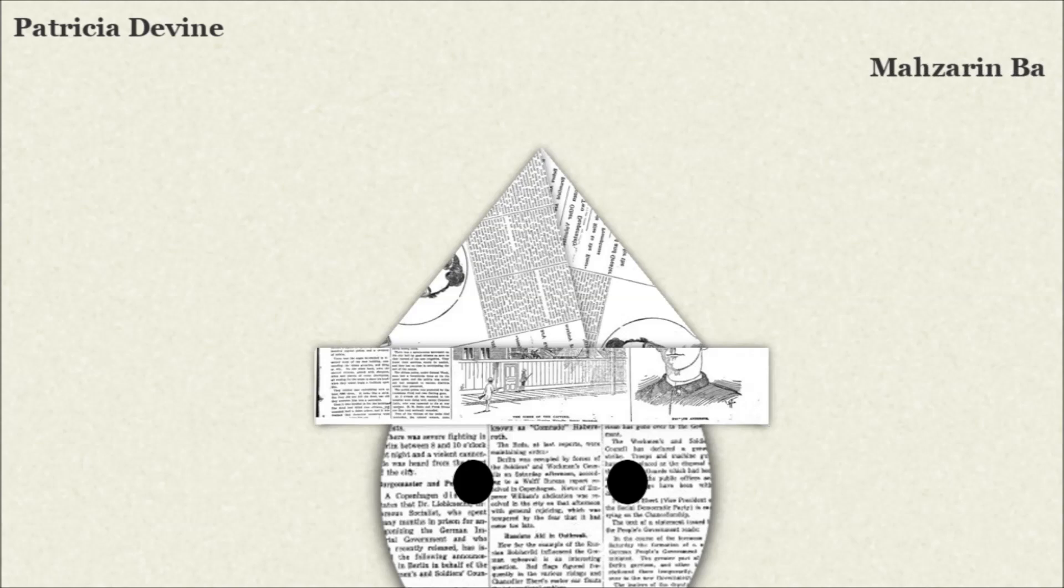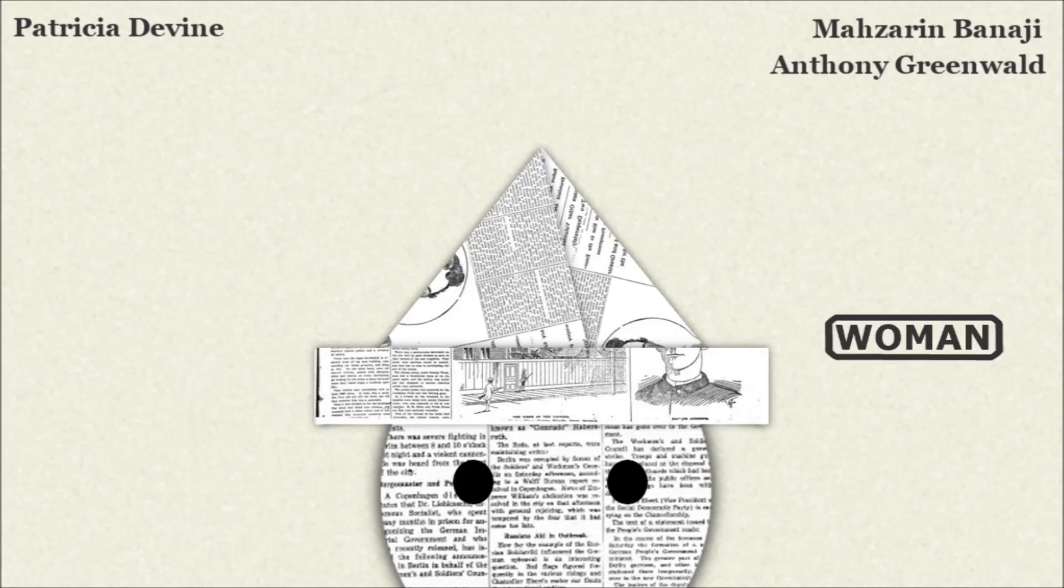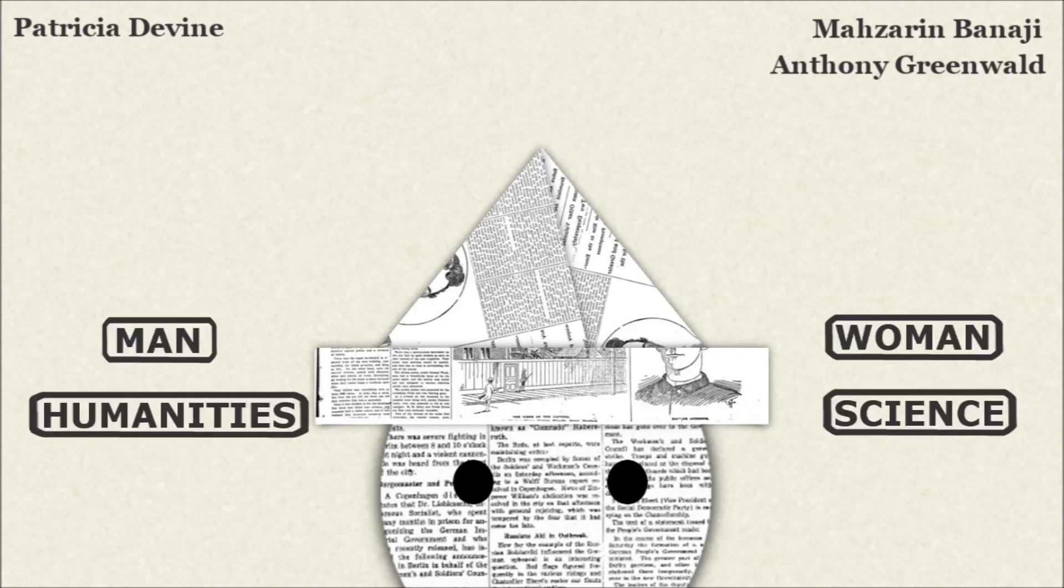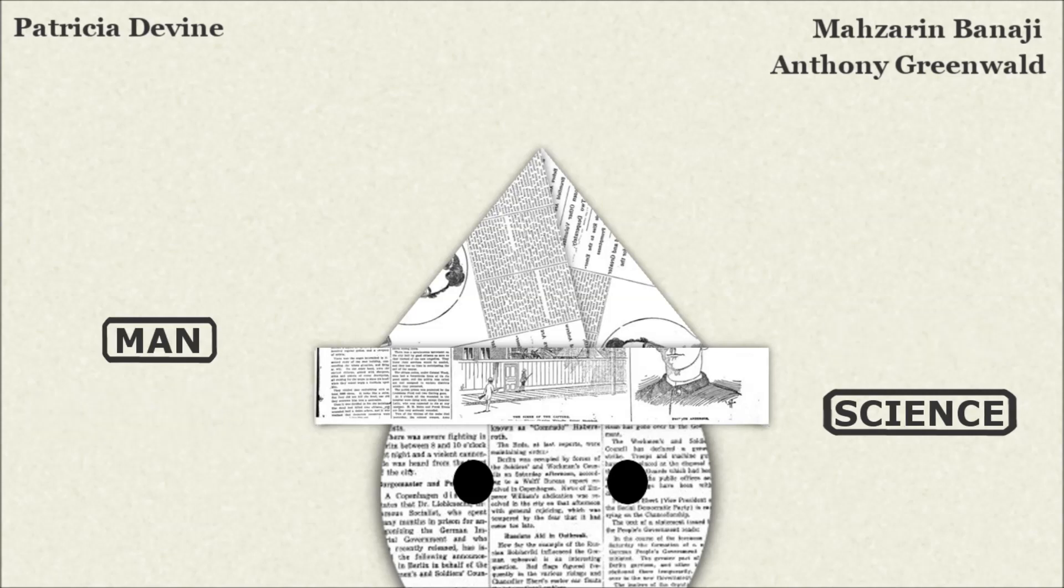Likewise, Mazarin Banaji and Anthony Greenwald developed the implicit association test, which millions of people have taken online to understand their own rapid associations between societal groups and certain stereotypes and negative evaluations. For example, between men and science and women and humanities.